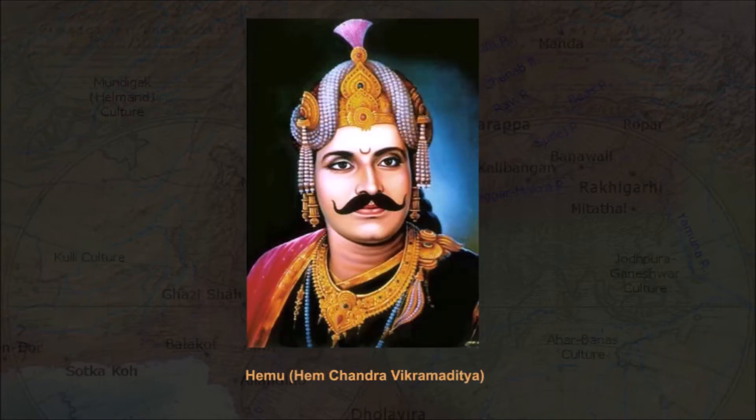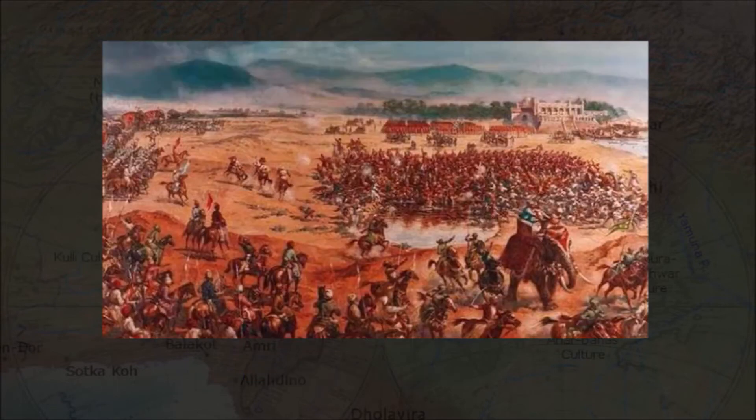Akbar, who reigned 1556–1605, defeated the Hindu king Hemu, also known as Hemchandra Vikramaditya, the then ruler of Delhi, at the Second Battle of Panipat in 1556, and re-established Mughal rule.